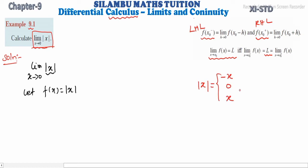So in three cases: if x is negative, then the modulus value is minus x. If x is equal to 0, the function value is 0. If x is greater than 0, we get a positive output.